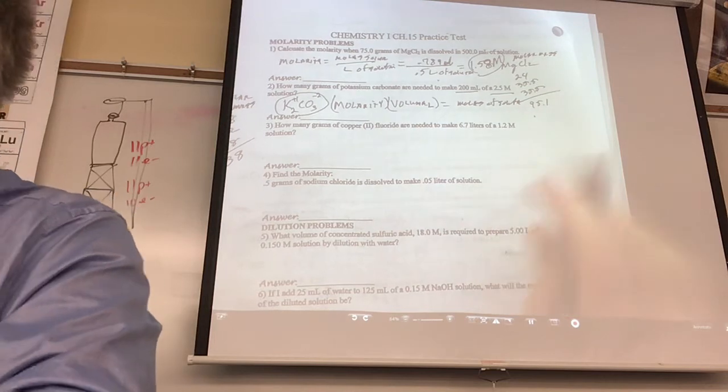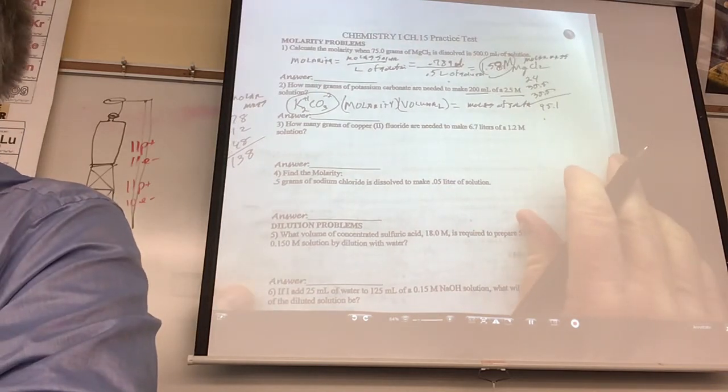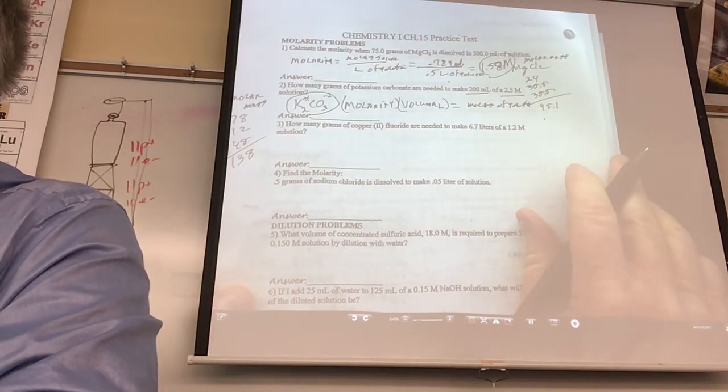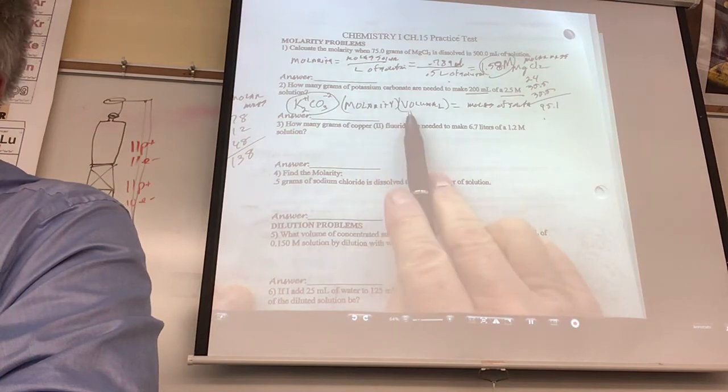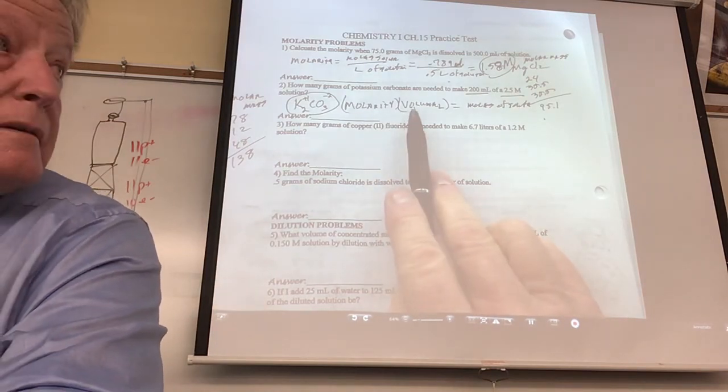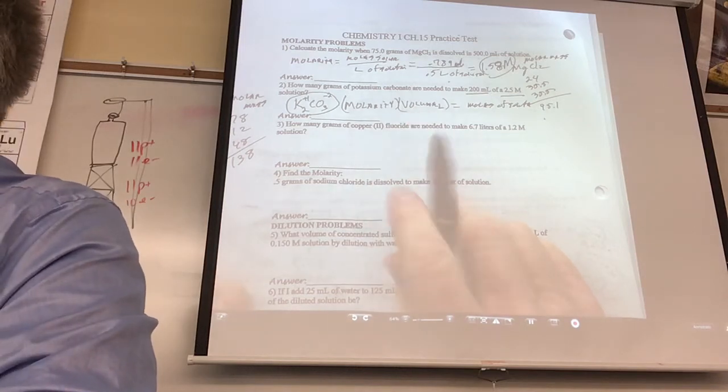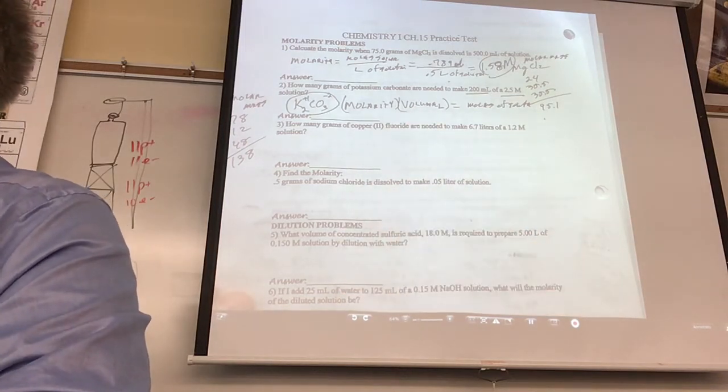Okay. All right, hold on. All right, we've still got 35 seconds. Okay, they want to know how many grams you would need. So if you find moles, how do you change moles into grams? Okay. To find moles, do I multiply the molarity times volume? That's true. All right, everybody, 10 seconds. 10 seconds. Five, four, three, two. All right.